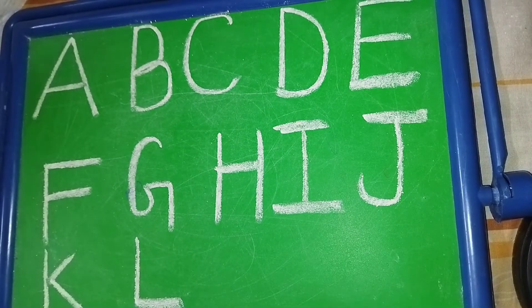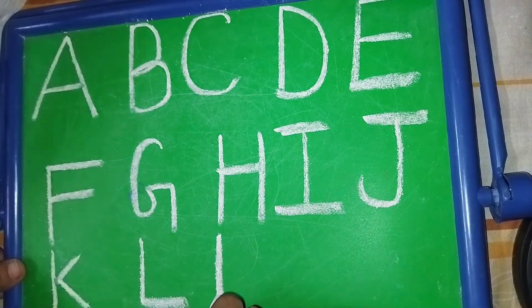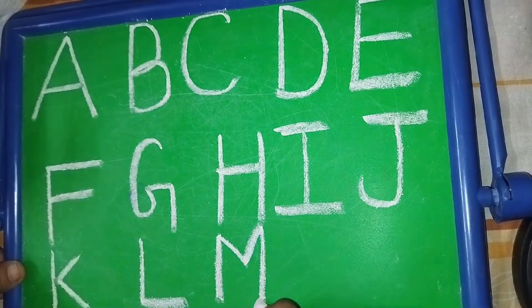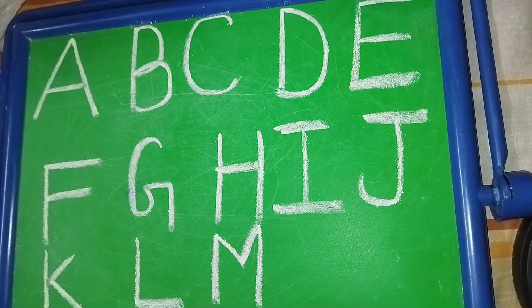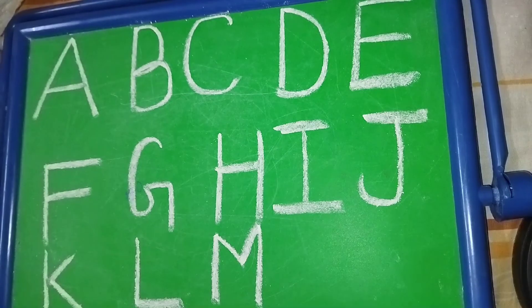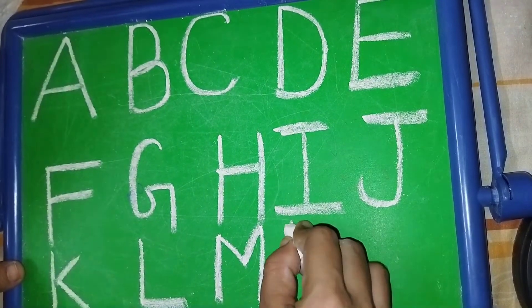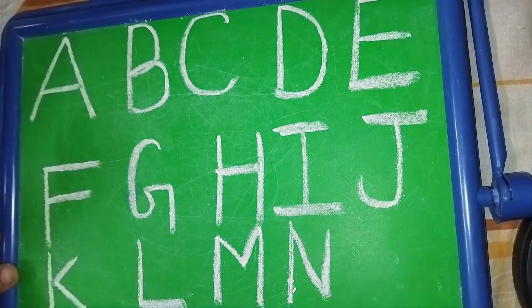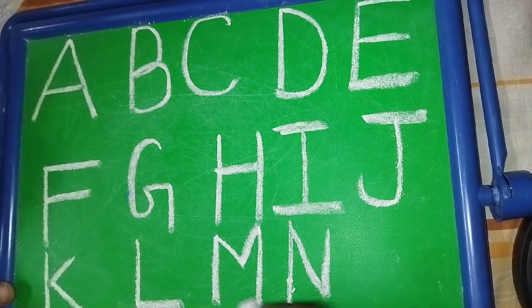L. L for lion. Lion means sher. M. M for monkey. Monkey means bandar. N. N for nest. Nest means bhosla.